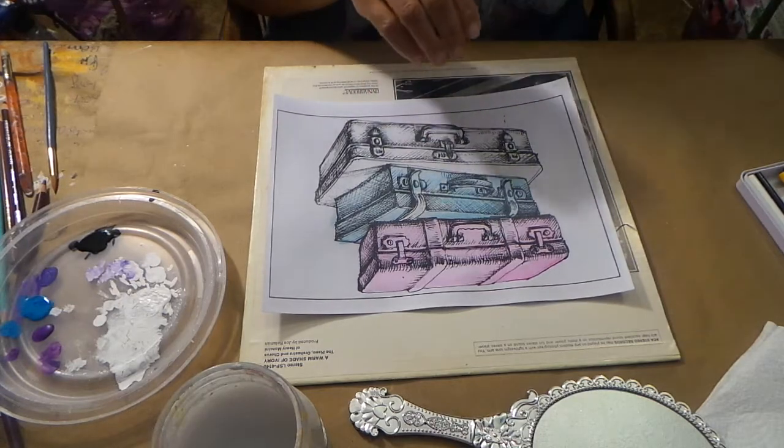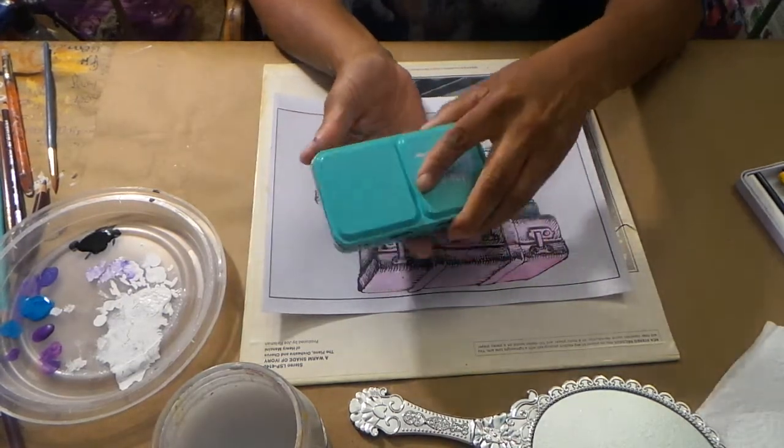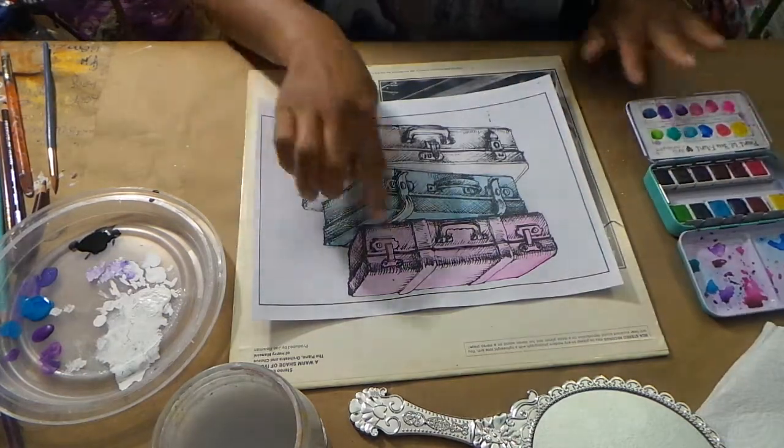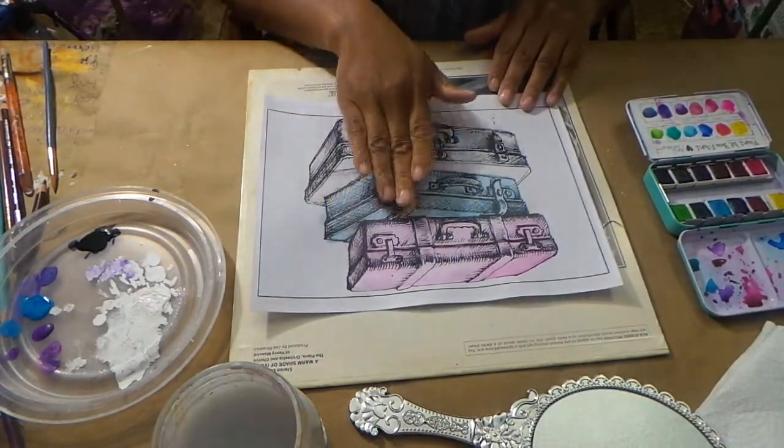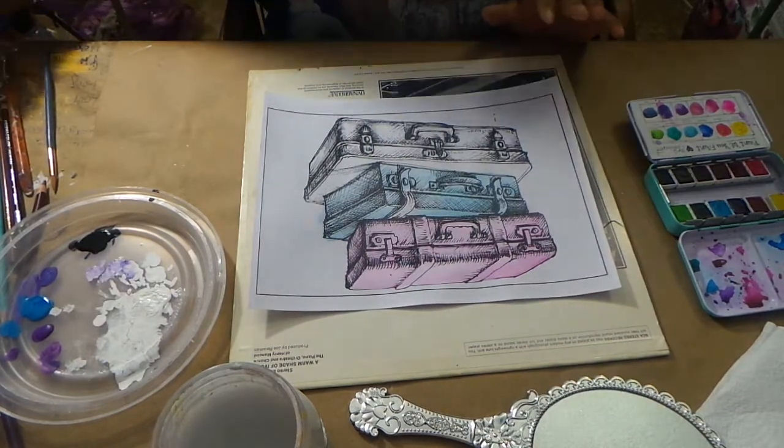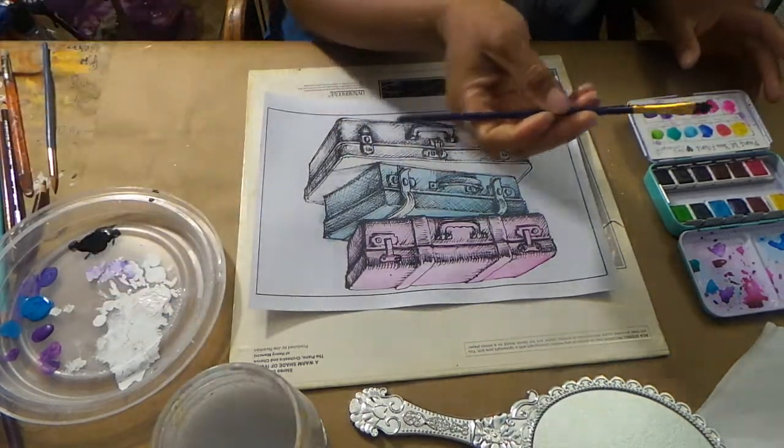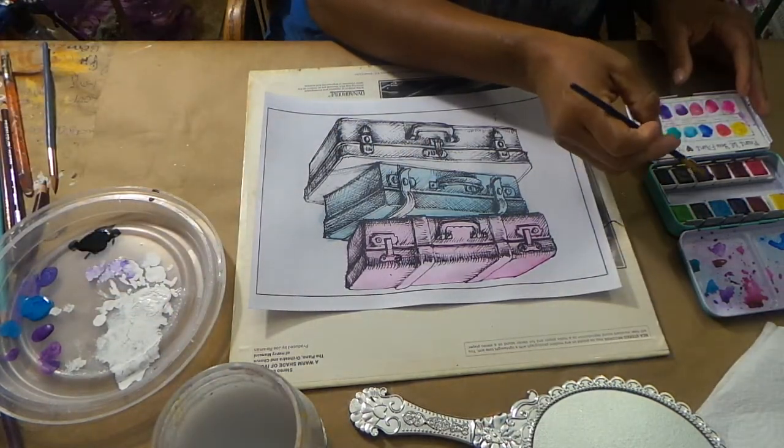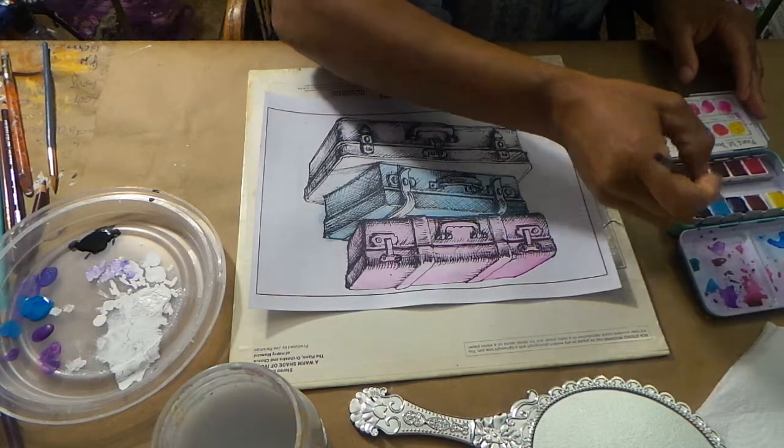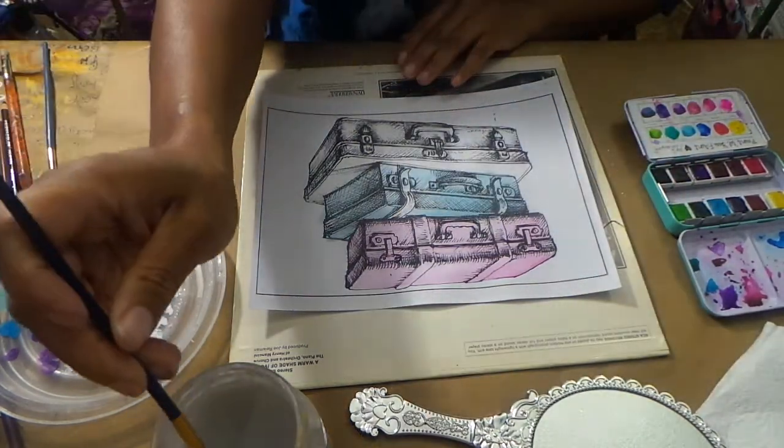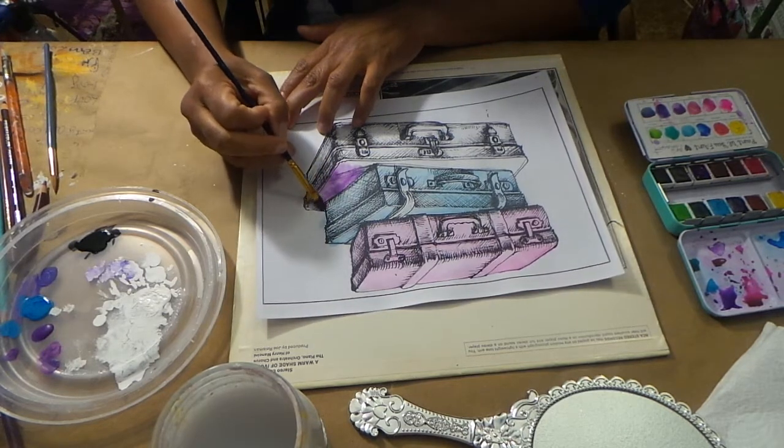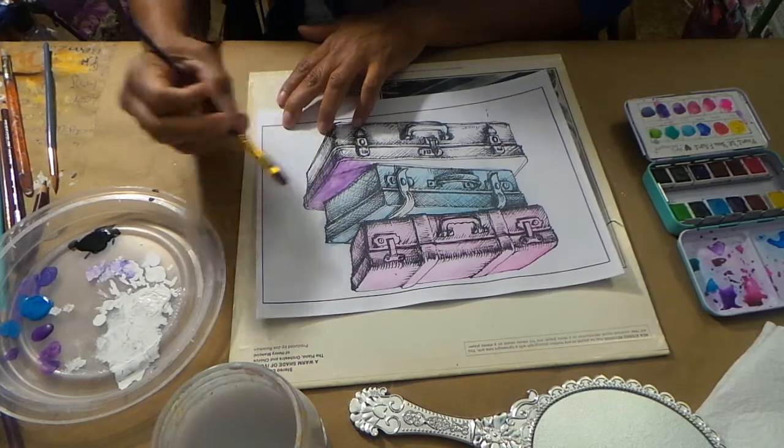To begin with, I used Jane Davenport's watercolors and I'm using her pencils along with Prismacolor pencils. This is watercolor base, which is what I like to do. And I already watercolor based the pink one. I'm going to watercolor base this down here, the purple one.